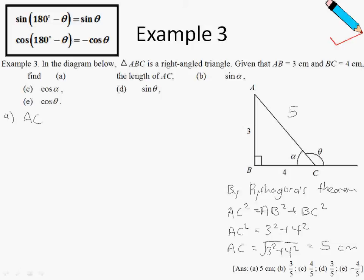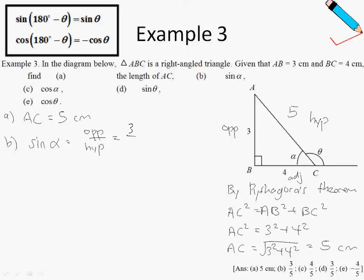For part B, we need the sine of alpha. Recall that sine of any angle equals opposite over hypotenuse. With reference to angle alpha, the opposite side is 3 and the hypotenuse is 5, so sine of alpha equals 3 over 5.